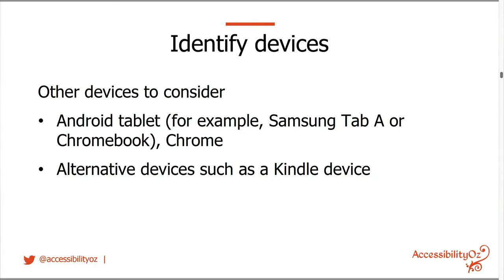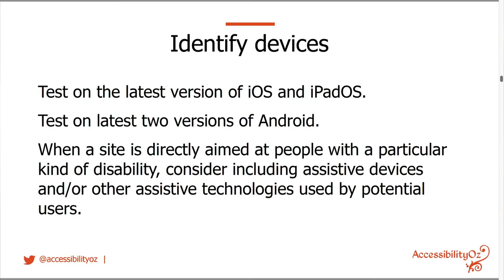Other devices to consider include an Android tablet with Chrome and alternative devices such as a Kindle — not for general websites, but if you know people will use it on a Kindle. In terms of versions, you only really need to test on the latest version of iOS and iPadOS, and the latest two versions of Android. Be aware that if your site is directly aimed at people with a particular kind of disability, consider including the assistive devices and technologies used by potential users. For example, a website for people with acquired brain injury — they may be using Dragon NaturallySpeaking, so you'd need to test with that.